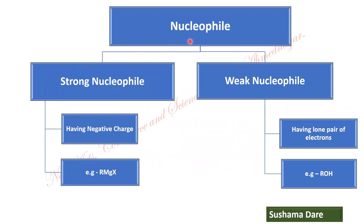On the basis of this, nucleophiles are subdivided into two types: strong nucleophile and weak nucleophile. Strong nucleophiles have a negative charge — for example, Grignard reagent RMgX, where R carries a negative charge, making R⁻ a strong nucleophile. Other examples of strong nucleophiles are hydroxide (OH⁻) and amide (NH₂⁻). Weak nucleophiles are those having only a lone pair of electrons — example is alcohol, where oxygen has an unshared pair of electrons.